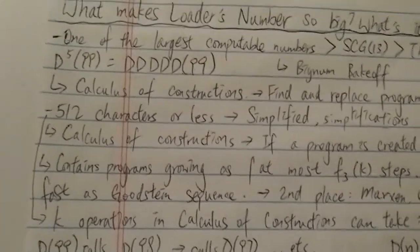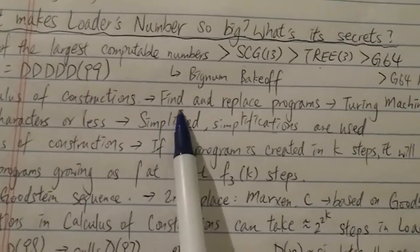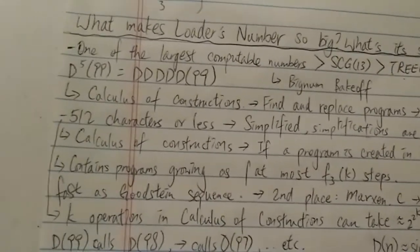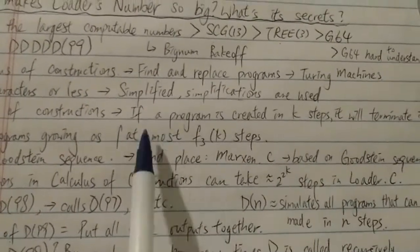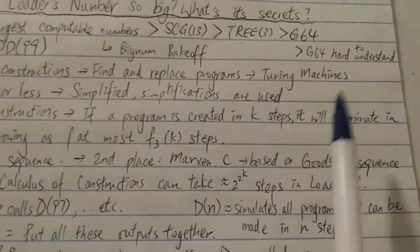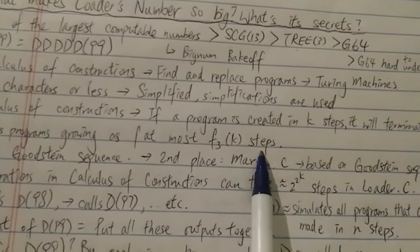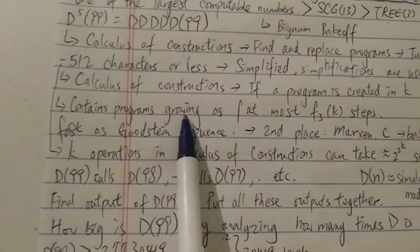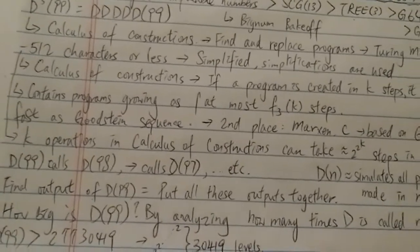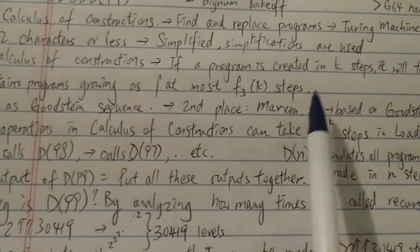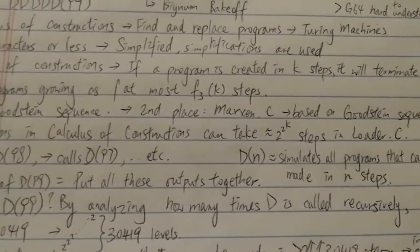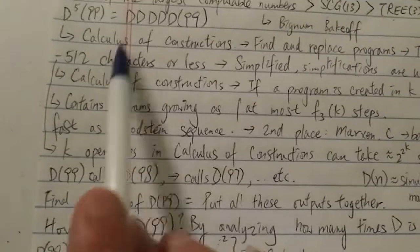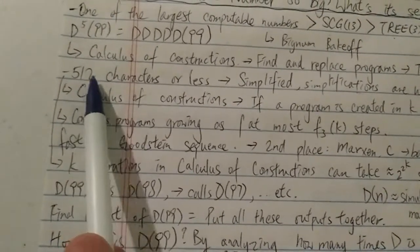I've simplified it a little bit. Loader's number is based on the calculus of constructions, which is related to define-and-replace programs and is as powerful as Turing machines. Quickly, to give you an idea of how powerful it is: if a program is created in k steps in the calculus of constructions, it will terminate in at most f(3k) number of steps, where f(3k) is the fast-growing hierarchy. The calculus of constructions contains programs that grow as fast as the Goodstein sequence. In fact, the second place in this contest is based on the Goodstein sequence, which is why Loader's number takes first place. The contest requires building a C program with 512 characters or less.